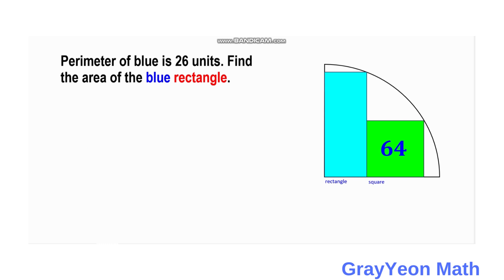Welcome to GrayonMath. We are asked to solve this problem. We have a semicircle, and inside this semicircle is a rectangle — a blue rectangle and a green square with an area of 64 square units. The perimeter of the blue rectangle is 26 units. Find the area of the blue rectangle.